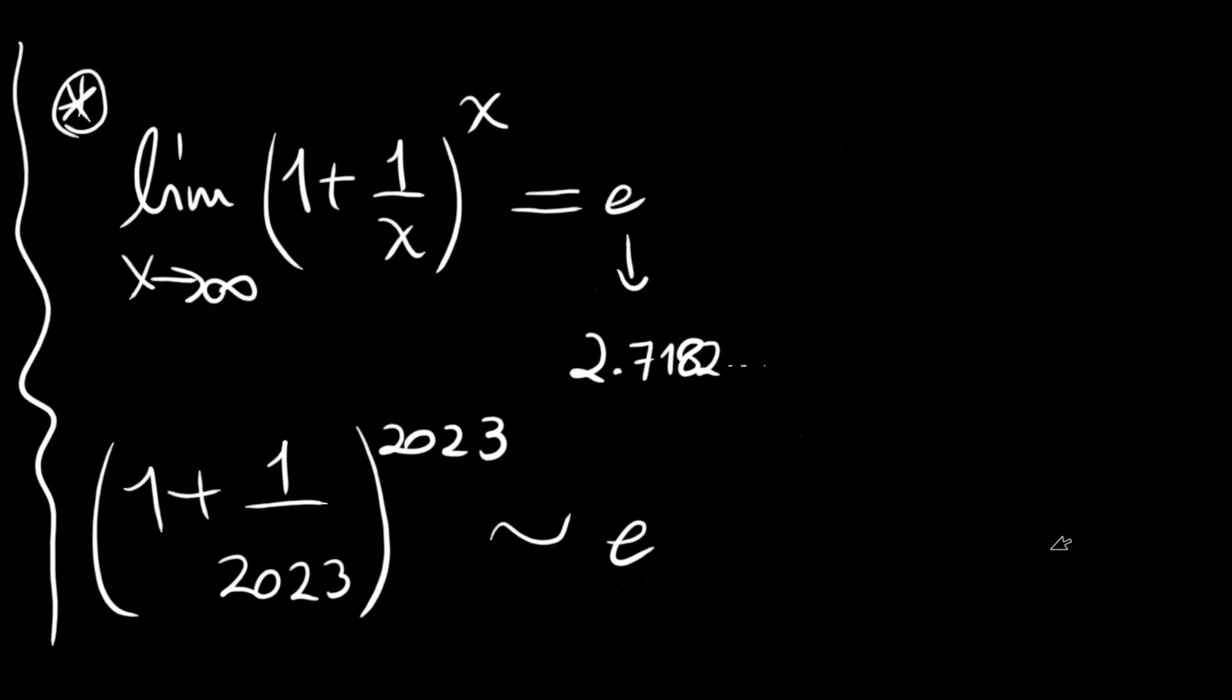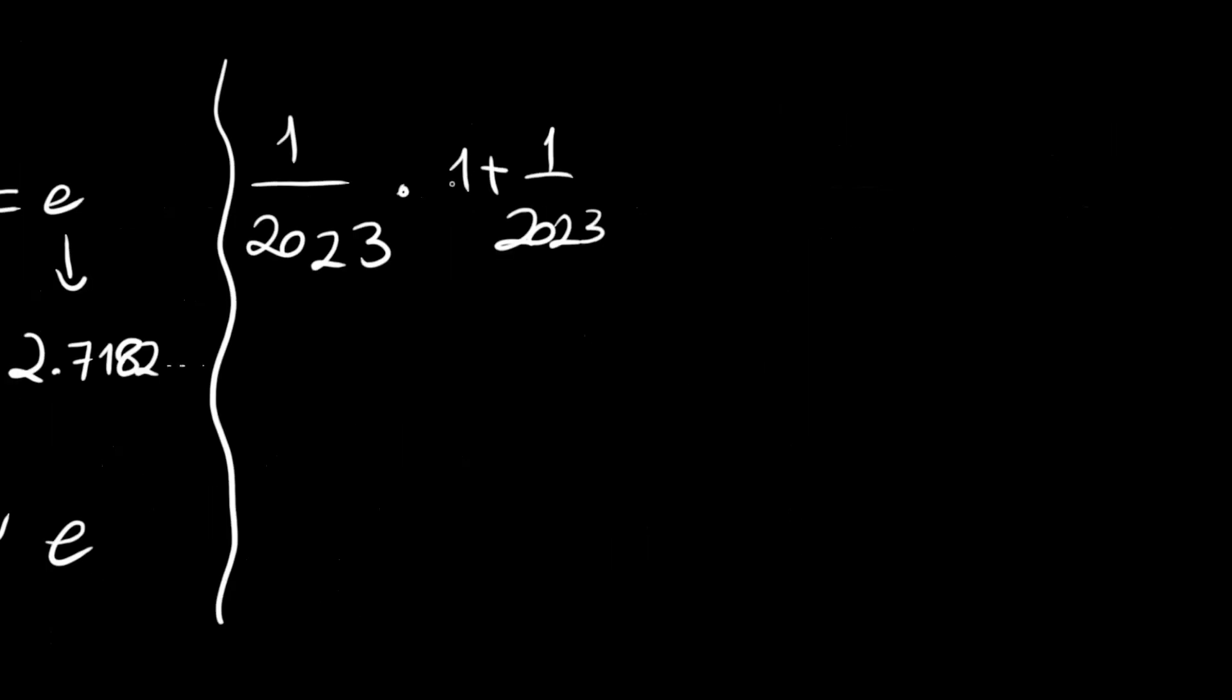So what we have now is 1 over 2023 times (1 plus 1 over 2023) to the power 2023. And this is, as I said, approximately e, which is 2.71. So this number is obviously